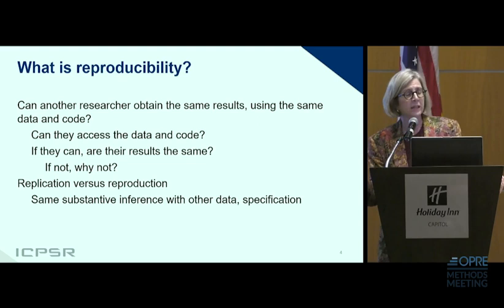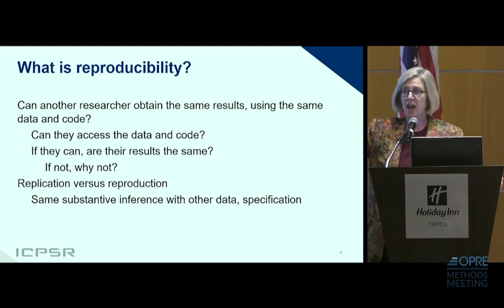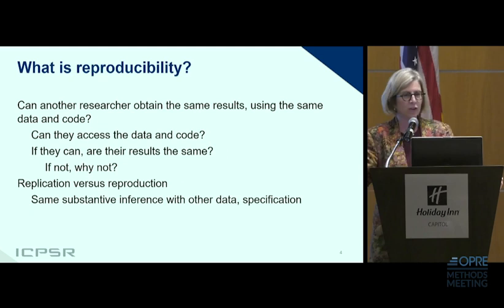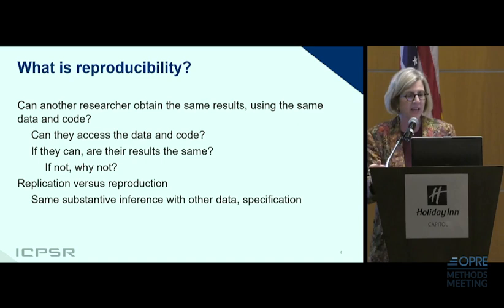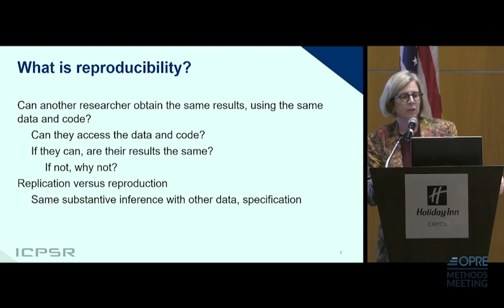There are other reasons that come up, such as versioning the data itself. You use the data, it got updated, you used a particular version. I work in the Health and Retirement Study — we have one version at Michigan, we have another version at RAND. They're not the same, right? They come from the same underlying data. So understanding the provenance and versioning of the data is important in actually enabling reproducibility.